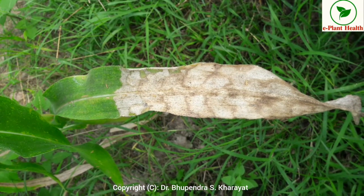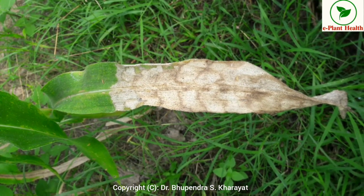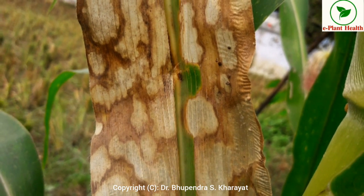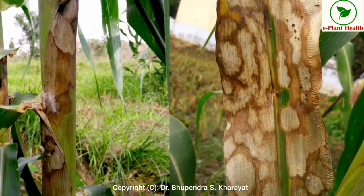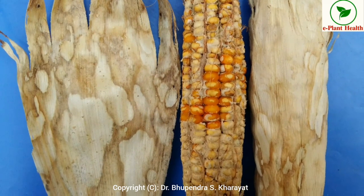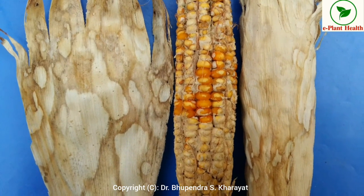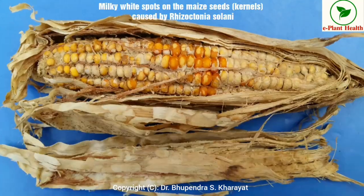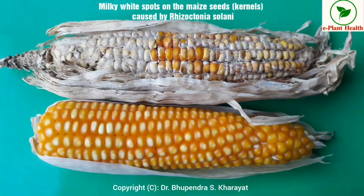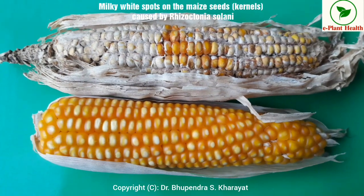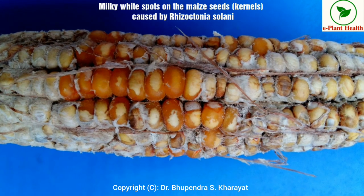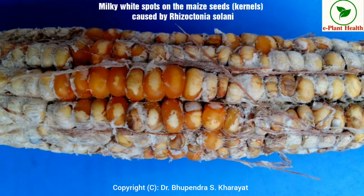This fungus also causes infection on husk leaves, silk, and seeds of the maize. On maize seeds, this fungus produces irregular white spots which are surrounded by a reddish-brown margin. These seeds are wrinkled or chaffy, dry and light in weight, as you can see the milky white spots on the maize seeds in this video.